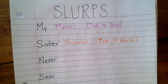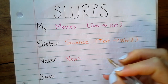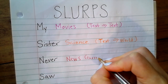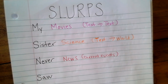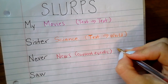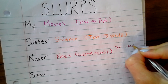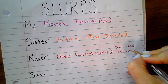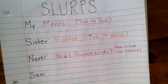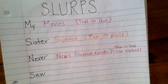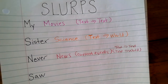'Never' is going to represent News — specifically current events, things that are happening right now. This one can be either a text-to-text or a text-to-world connection. Text-to-text would be if you actually read something in a newspaper, news magazine, or online, or watched the nightly news. Text-to-world would be something you know from hearing your teachers, friends, or parents talk about what's happening in the world today.